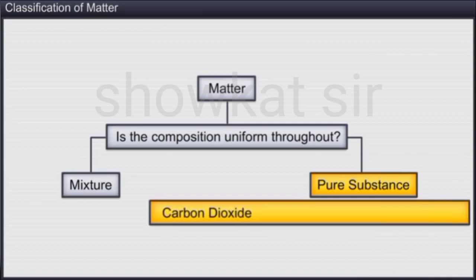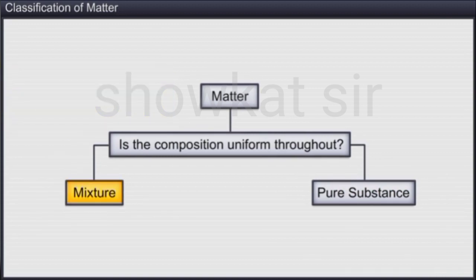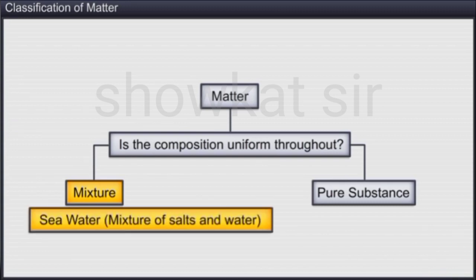Carbon dioxide consists of carbon and oxygen atoms in a fixed ratio. In mixtures, elements or compounds are mixed together in any ratio or proportion. There is no definite ratio in mixtures. Air is a mixture. Similarly, salt and sugar solutions are mixtures, just like seawater, which is a mixture of salts and water present in any proportion.